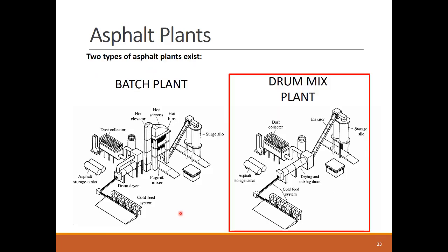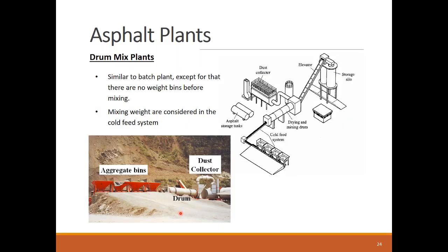Let's now see how drum mix plants are different. They are similar to the batch plants, but there is something missing: the mixing tower. The sieving, weighing, and mixing functionalities of the tower are now done by the drum and the cold feed system. In the cold feed system, the aggregate is weighed and sieved per the mix design requirement, considering the moisture content already existing in the bins. The drum here performs both drying and mixing.